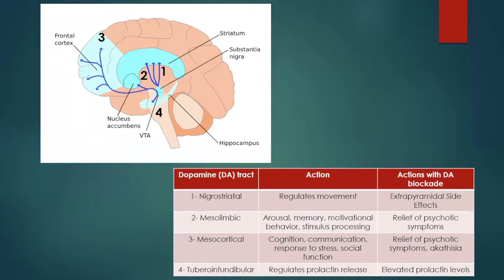Focusing on the four dopaminergic pathways: first, the nigrostriatal pathway, predominantly associated with movement disorder and extrapyramidal side effects. Second, the mesolimbic pathway, where we see many positive symptoms of psychosis such as hallucinations. Third, the mesocortical pathway, associated with negative symptoms, executive functioning, emotional response, and cognition — and possibly adverse effects like akathisia. Fourth, the tuberoinfundibular pathway, our prolactin pathway — when we block dopamine there, we see elevated prolactin levels.